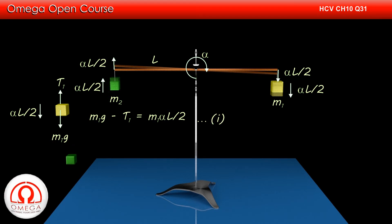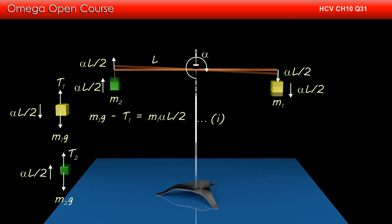In the free body diagram of m2, gravitational force of m2g will act in the vertically downward direction. Assuming the tension in the string to be t2, t2 will act upwards and the block will accelerate upward with acceleration of alpha l by 2. From the FBD, we get t2 minus m2g equals m2 times alpha l by 2.